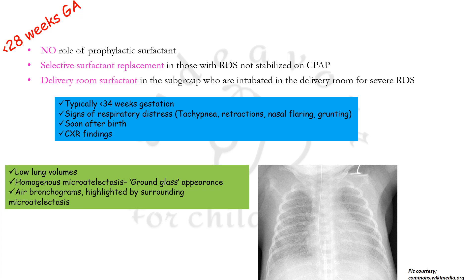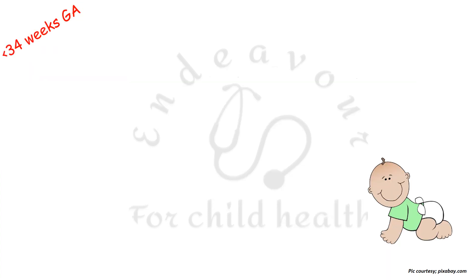There is a term referred to as delivery room surfactant, given to the subgroup of babies less than 28 weeks gestational age who were intubated in the delivery room itself. For severe RDS in them, you can consider delivery room surfactant — this is not prophylactic surfactant.